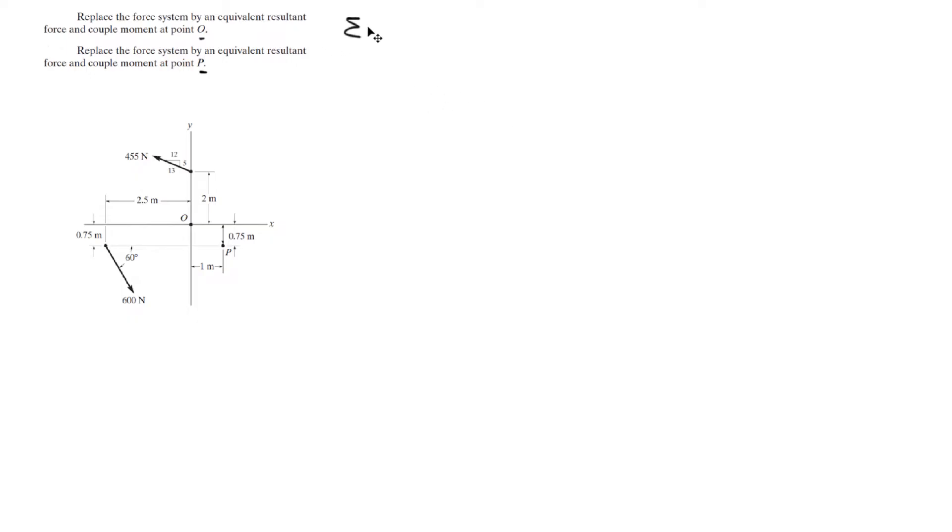Basically, you know that the resultant force is equal to the sum of the forces, so let's call this one F1 and let's call this one F2. So we know that the resultant force is equal to F1 plus F2. Now we've got to find the Cartesian vector form of each, so let's find F1.